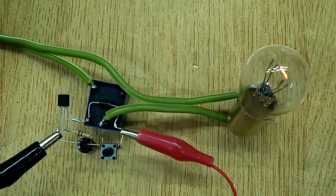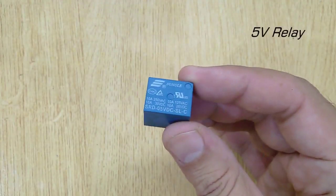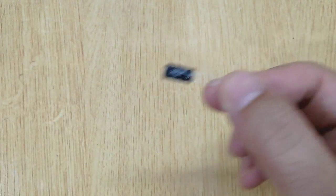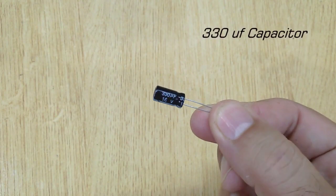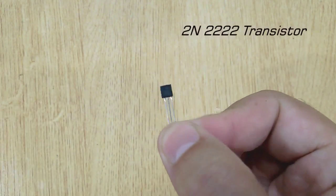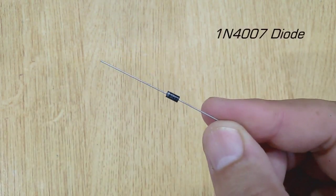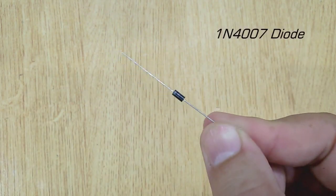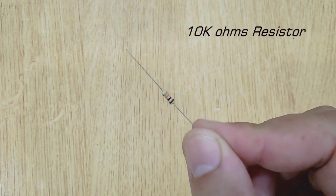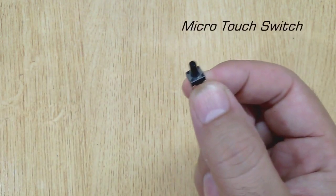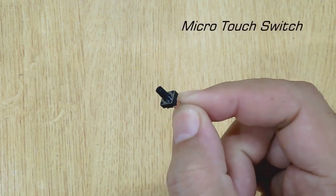To make this time delay circuit you will need: 5 volt relay, 330uF capacitor, 2N2222 transistor, 1N4007 diode, 10K ohm resistor, and micro touch switch.